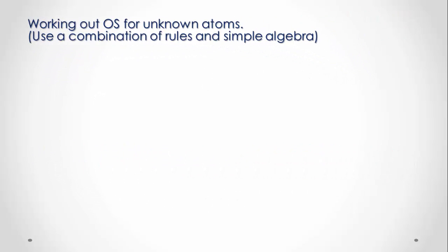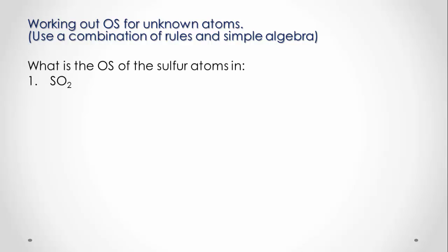Now we use a combination of rules and simple algebra to work out the oxidation state of unknown atoms in compounds and ions. Let's try with three sulfur-containing species. In the first example, sulfur dioxide: there is one sulfur atom and two oxygen atoms in this neutral molecule, so all the oxidation states must add to give zero. Solving the algebraic expression — sulfur plus two oxygens equals zero — gives sulfur an oxidation state of positive four.